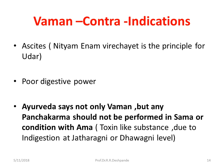Another contraindication is ascites. Ayurveda says 'nityam enam virechayet' — the principle for ascites (udara vyadi) is that these patients should be given Virechana frequently, not Vamana. Vamana should also be avoided when there is poor digestive power. Ayurveda says not only Vamana but any Pancha Karma should not be performed in a 'saam' condition — when the disease or dosha vitiation is combined with ama. Ama is a toxic substance due to indigestion at the Jatharagni or Dhatvagni level.